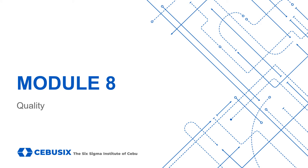In this module, we will be discussing the concept of quality. This module will take approximately 50 minutes to complete. At the end of this module, there will be a 5-question quiz on the topics discussed, which you can complete on your own at any time. You will also find several Six Sigma tools that you can download, including a critical-to-quality tree template and a cost-of-poor-quality calculator, both of which are Excel files.